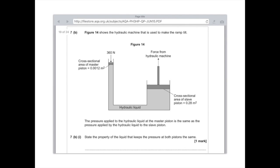The pressure applied to the hydraulic liquid at the master piston is the same as the pressure applied by the hydraulic liquid to the slave piston. That's really important. State the property of the liquid that keeps the pressure at both pistons the same. The answer here is always the same. You need to say that the liquid is virtually incompressible. And what that means is that the liquid cannot be squashed.